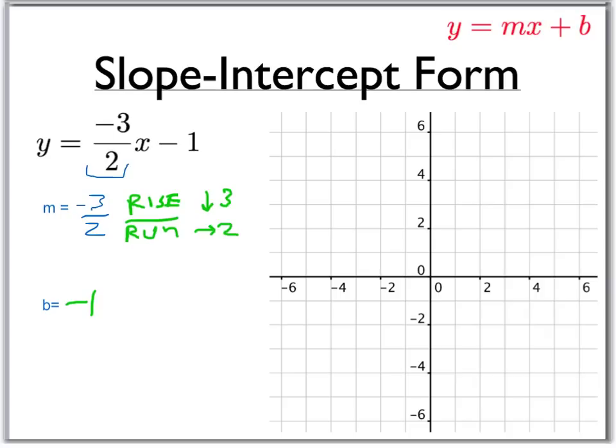And what that means is a point on the graph is the point 0, negative 1.